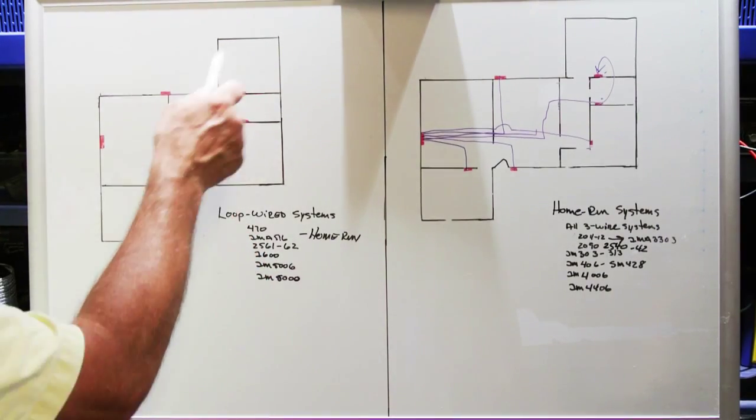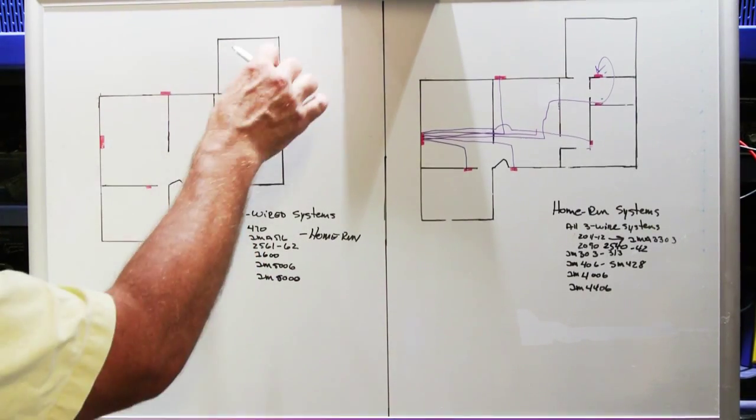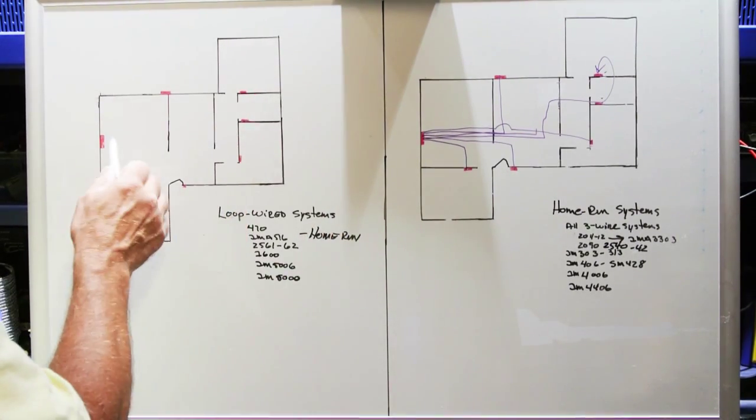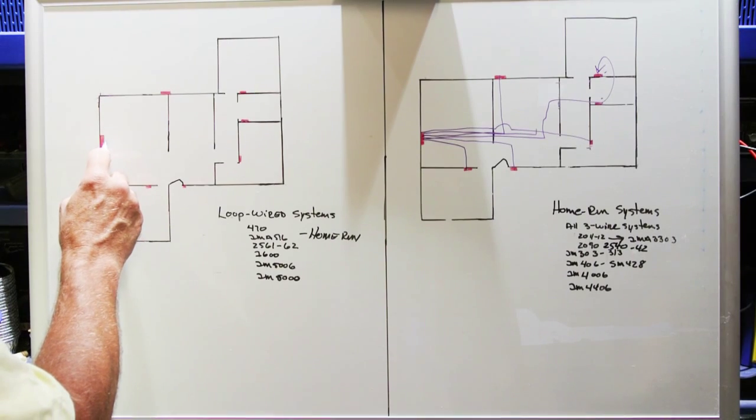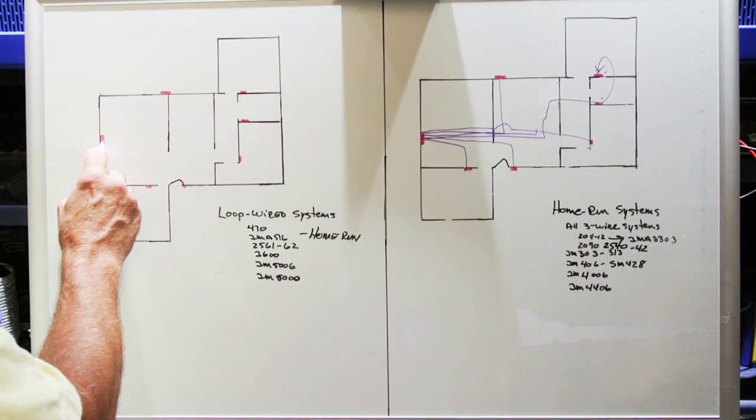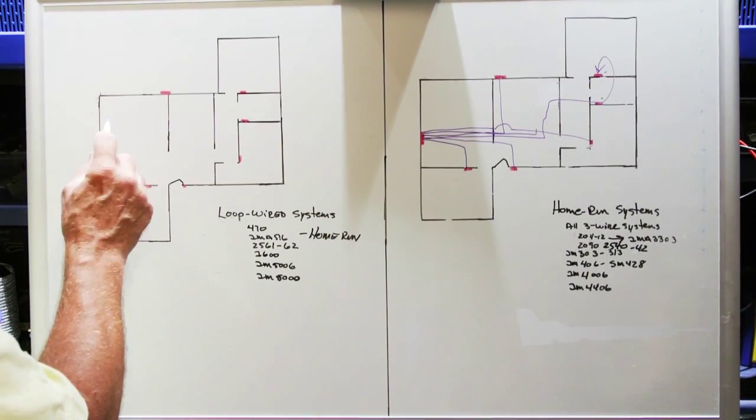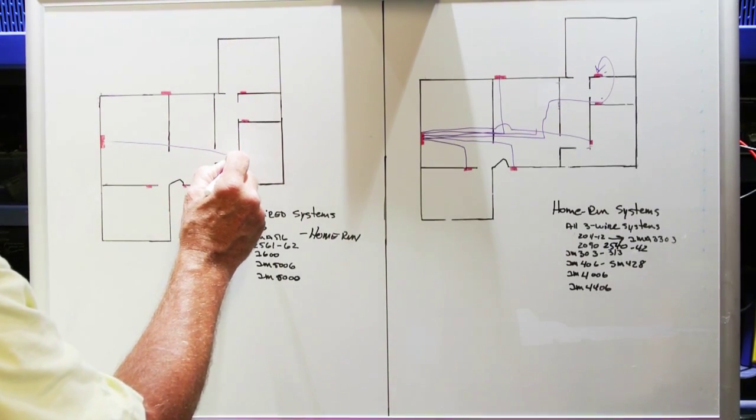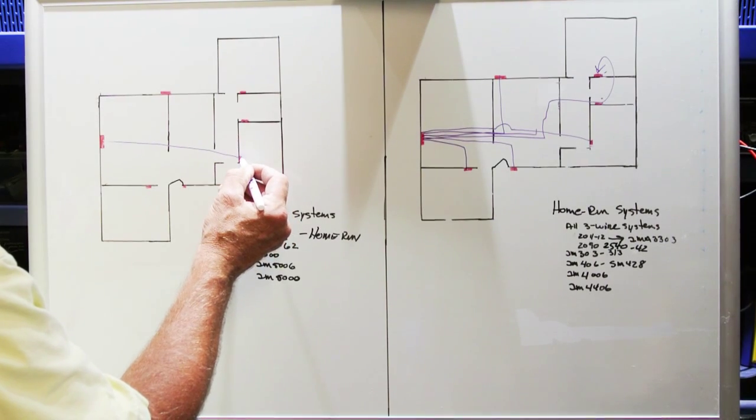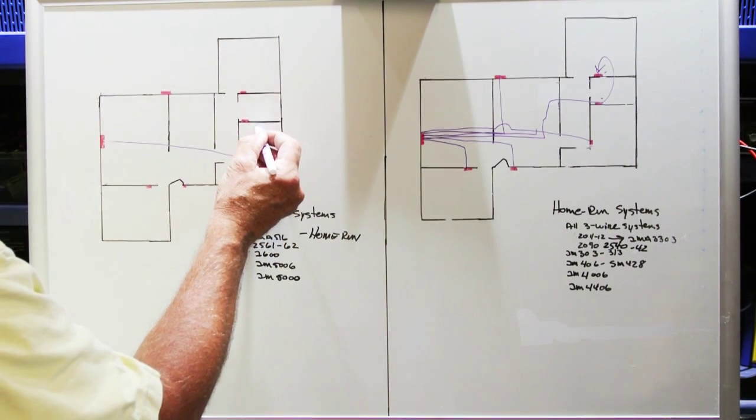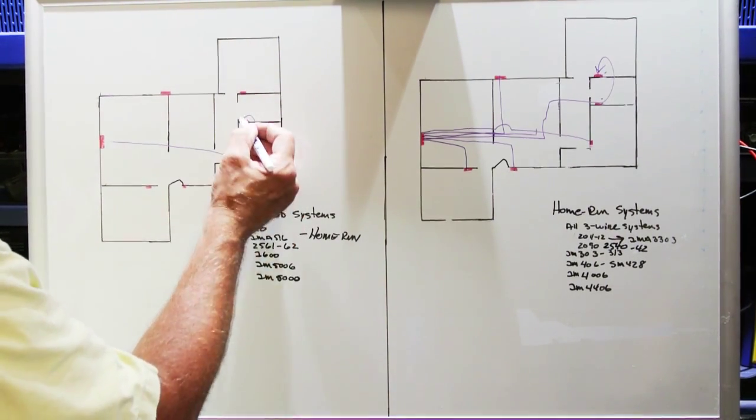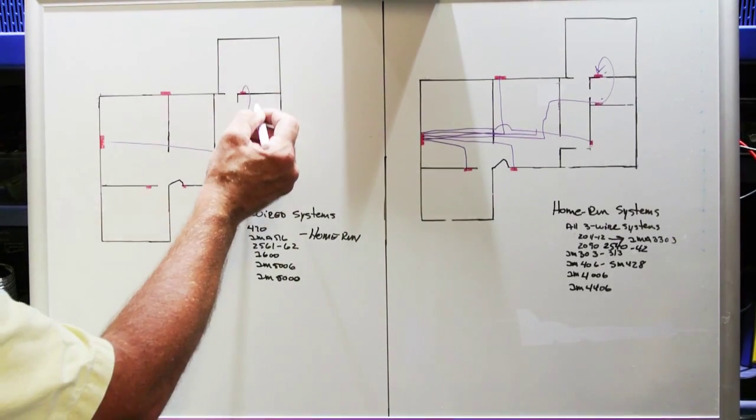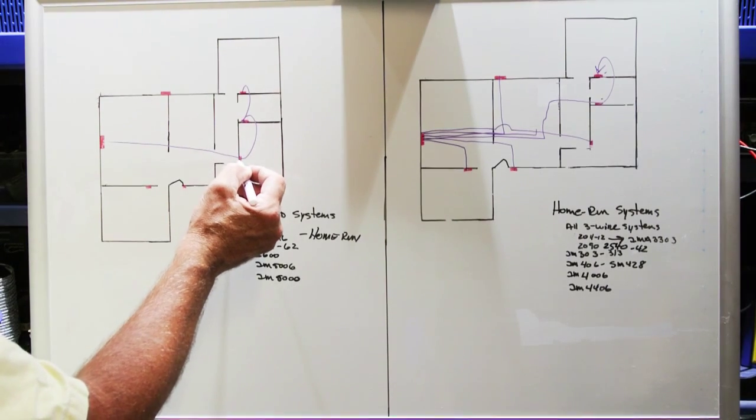And in most installations, the layout generates opportunity to loop some speakers, but home run other speakers. And in wiring for loop wired equipment, it's acceptable to loop wire and home run in the same system. So for instance, in this example house, if we're going to wire these three speakers, two bedrooms and a bathroom, the installer can take a single cable and run it from the master station to the first bedroom speaker and then loop from that bedroom speaker to the bathroom to the next bedroom. This is exactly how a loop wired system is done.